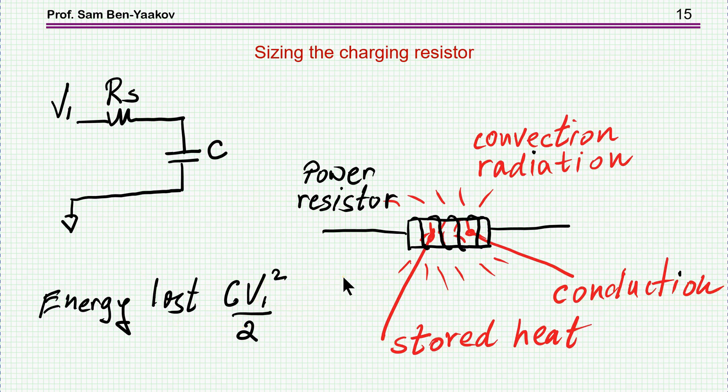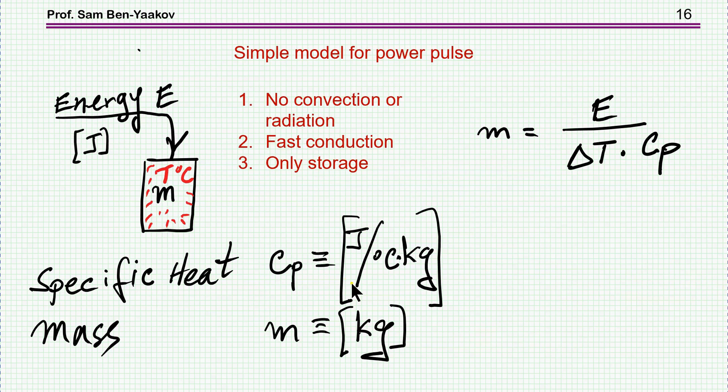So how can you deal with it? A very simple model for it, which I suggest here, is the following. You have a mass, this is the resistor, which you pump in energy, and then the temperature will go up. Now, the parameter related to this process is the specific heat capacity of the material, which is defined in terms of Joule per degree centigrade per kilogram.